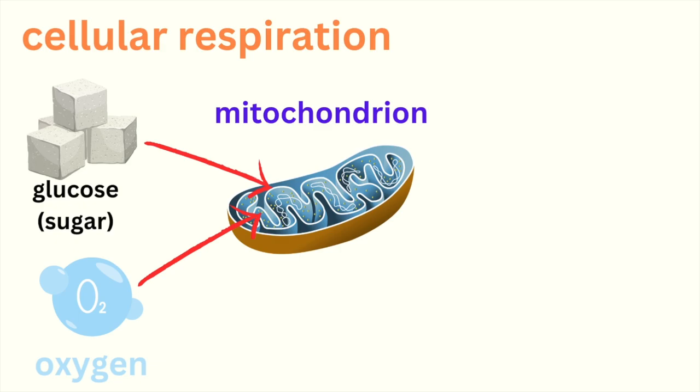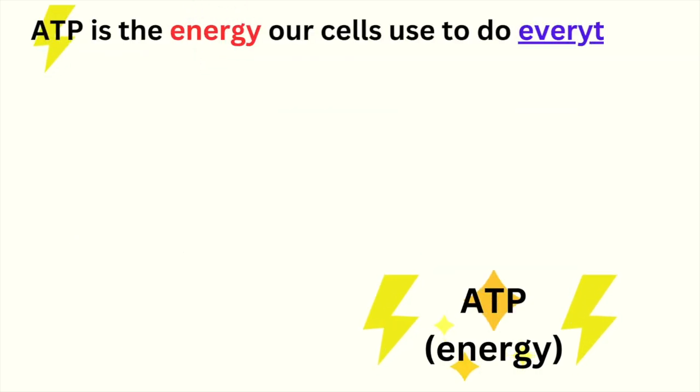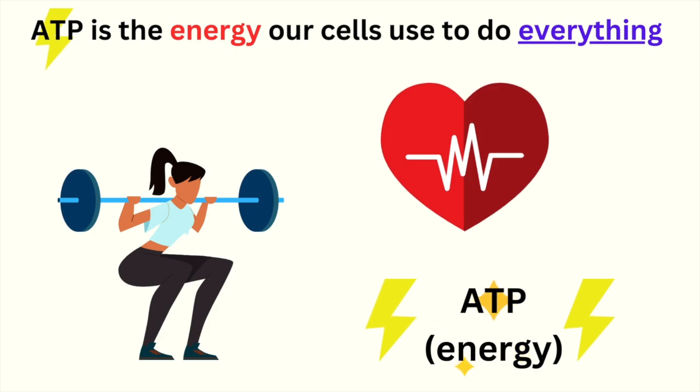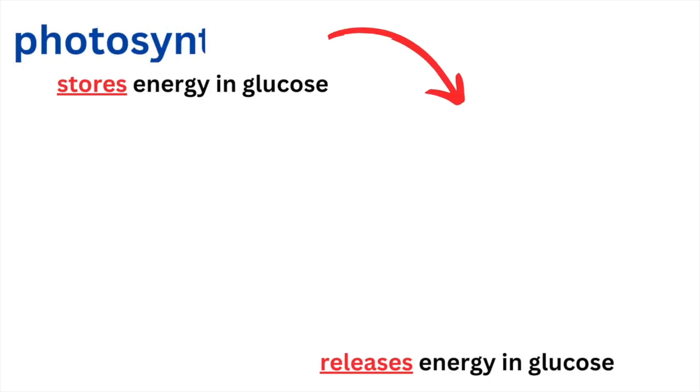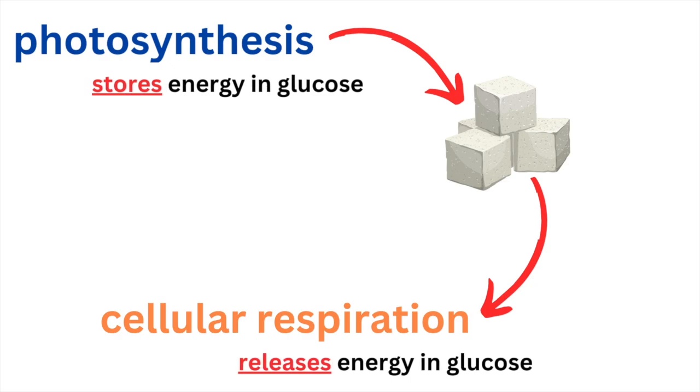When glucose and oxygen combine inside the mitochondria, they break down into carbon dioxide, water, and energy in the form of ATP. This ATP is the energy our cells use to do everything, from moving muscles to keeping our hearts beating. So while photosynthesis stores energy in glucose, cellular respiration releases it.